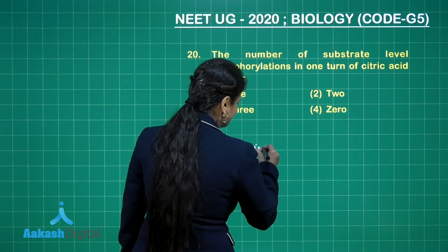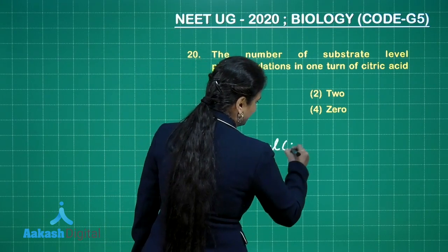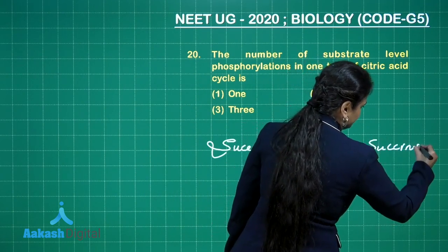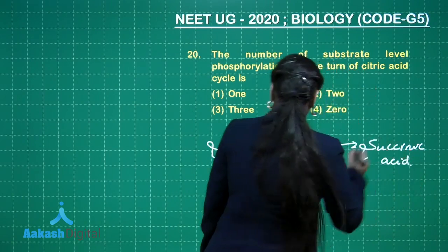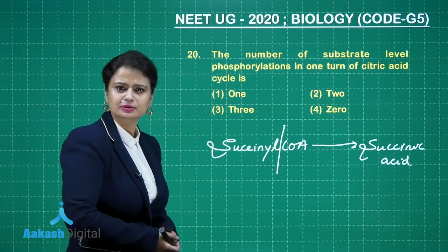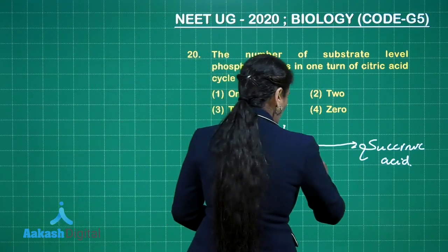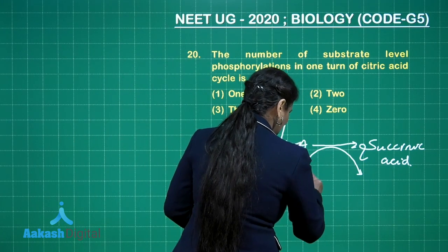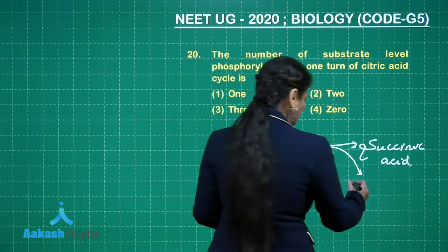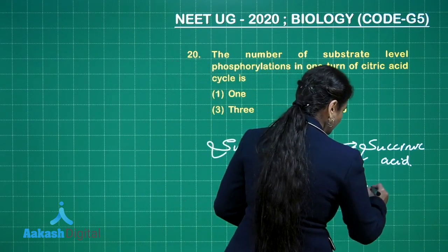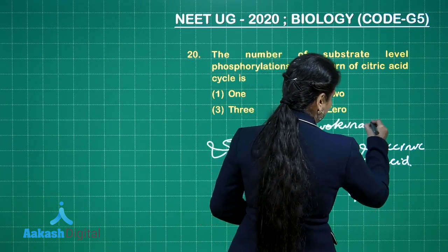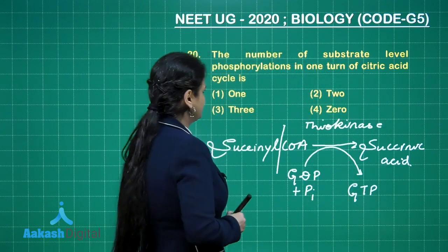At that step, succinyl-CoA is converted into succinic acid. There is breakdown of coenzyme A, which releases lots of energy, and that energy is used for the synthesis of GTP. GDP (guanosine diphosphate) and Pi (inorganic phosphate) join together to form GTP. The enzyme involved here is thiokinase. So the correct answer is option number one.